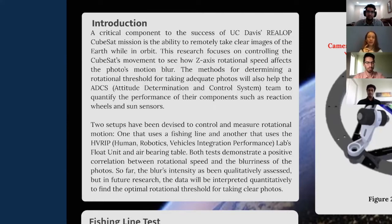The first method uses a platform hanging from a fishing line, and the second method, which is a collaborative effort between our club and the Human Robotics Vehicles Integration and Performance Lab, uses a platform that acts sort of like a reverse air hockey puck in that it rotates freely on a thin layer of compressed air. Not only are these setups helpful for our research, but this method of recording motion while in motion will be a huge help to other members of the attitude, determination, and control systems team who also have rotating components in need of testing. Now, Andre is going to talk about the two methods I just mentioned.